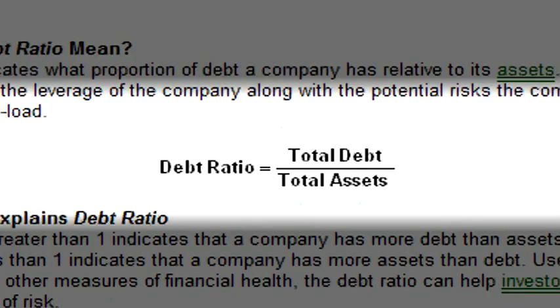The second set of ratios is debt ratios. This helps an analyst understand how much debt the company has and whether it's healthy to have that much debt, or whether they could even accumulate more debt. The first debt ratio is the debt ratio, which is simply taking the total liabilities and dividing by the total assets. This helps an analyst understand if the company has so many liabilities that its assets are not able to cover them, or vice versa, if the company has enough assets to pay off all of its remaining debt.